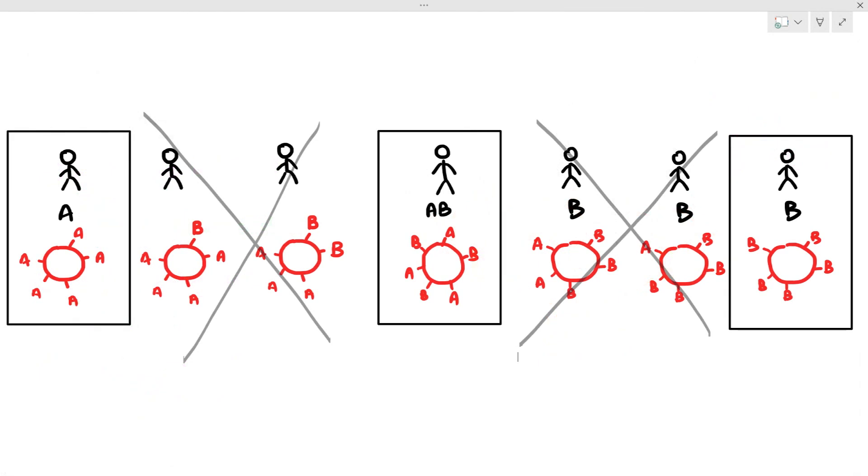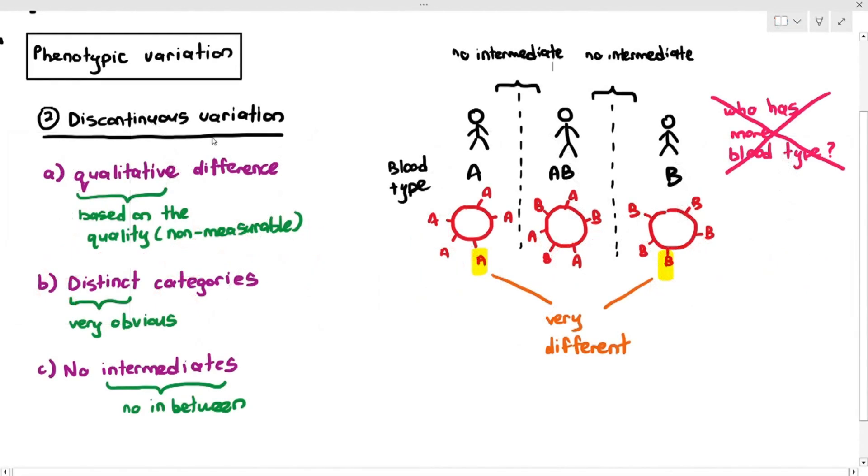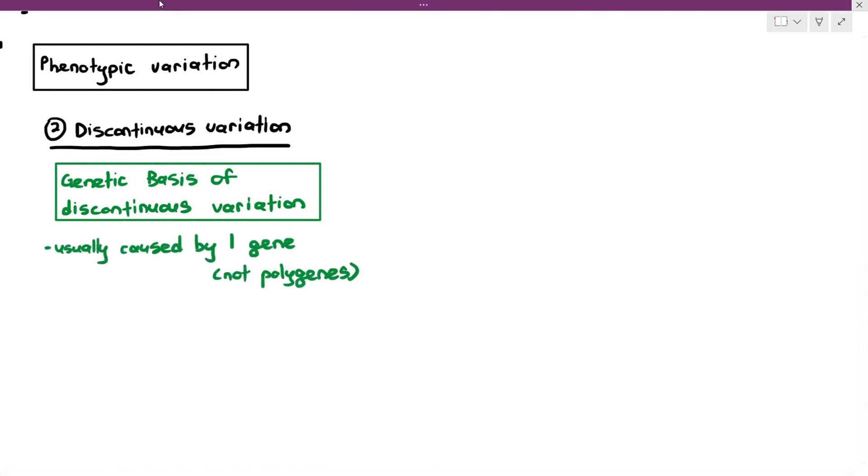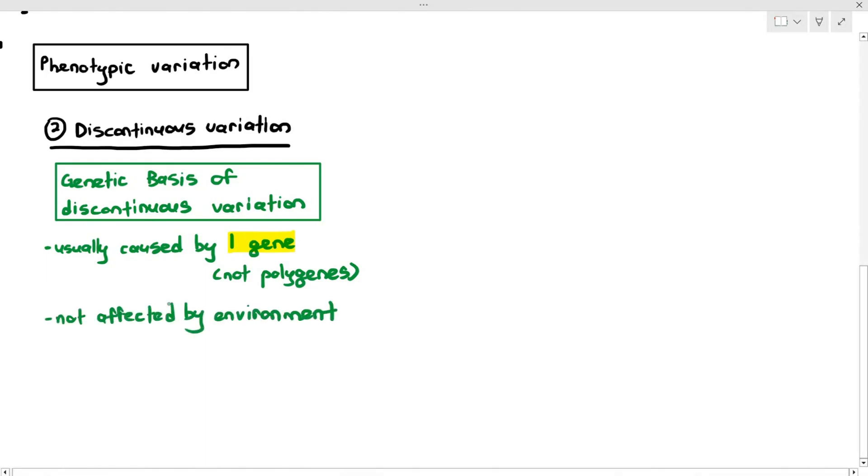There are no people with A with a little bit of B, B with a little bit of A. The categories are just as A, AB, or B. And of course, there's also blood type O as well. So those are the four categories. They are very distinct and there are no in-betweens or intermediates. For the genetic basis of discontinuous variation, it is very simple. Well, most of the time, the reason why you will have these limited phenotypes, it's not in a range, you'll only have a limited phenotype. The reason is because it's usually caused by just one gene. It's not polygenes. There can be some discontinuous variation which is caused by two genes, but the point is very little genes affect the phenotype in this case. And a lot of times also, discontinuous variation is not affected by the environment.